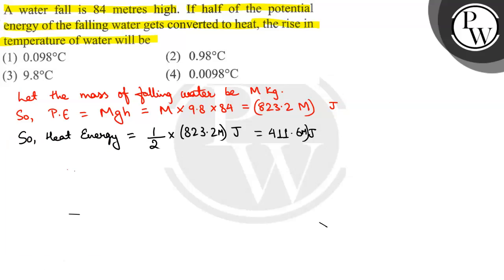Okay, 411.6 M Joule. Now, heat energy is M mass of water into C, capital C is specific heat capacity of water, into delta theta. Delta theta is rise in temperature. That will be equal to 411.6.